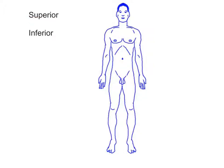Superior refers to a structure near the head, or the upper part of a structure. The nasal region is superior to the oral region at the mouth. Inferior refers to a structure away from the head, or a lower part of a structure. The umbilical region at the navel is inferior to the cervical region at the neck.